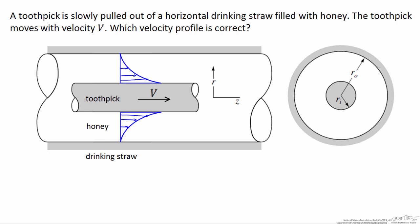The first is that the shear stress acting on the fluid is greatest at the wall of the toothpick, and it's smallest at the inner wall of the drinking straw, because the shear stress here has to act over a smaller area than the inner wall of the drinking straw. Another relationship we need is that shear stress equals the dynamic viscosity times the partial derivative of the velocity in the z direction with respect to r.